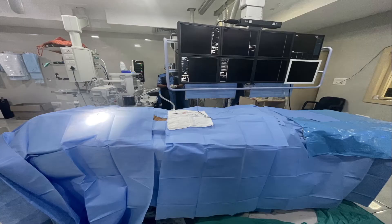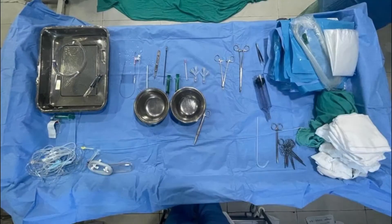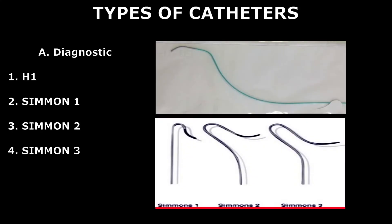The patient was positioned supine with a headrest, and arms were placed beside the body in extension with support. The sterile angiography coupon table should be positioned behind the operator, who faces the angiography operating table. The length of the table should be long enough that catheters and wires may be stretched over it.